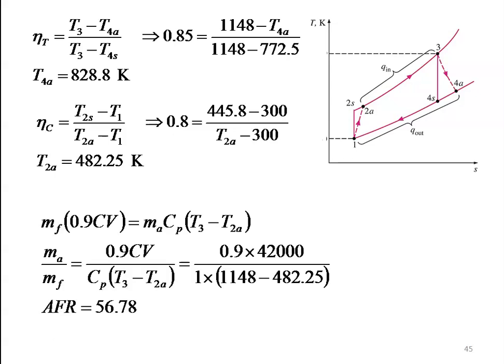The heat produced equals the rise in enthalpy of the air, so Mf × 0.9 × CV = Ma × Cp × (T3 − T2a). Rearranging: Ma/Mf = 0.9 × CV / (Cp × (T3 − T2a)) = 0.9 × 42,000 / (1 × (1148 − 482.25)) = 56.78. The air-fuel ratio is 56.78.